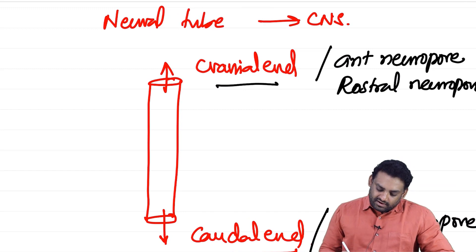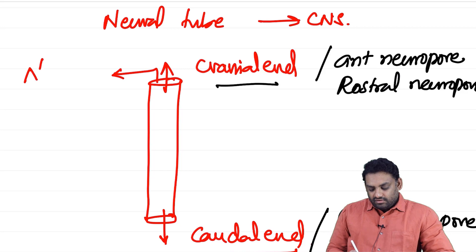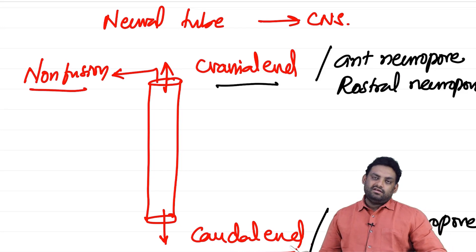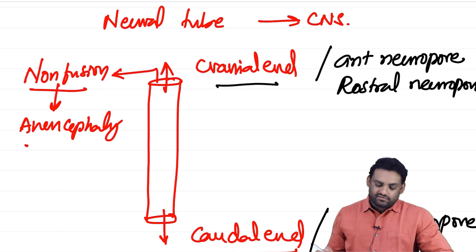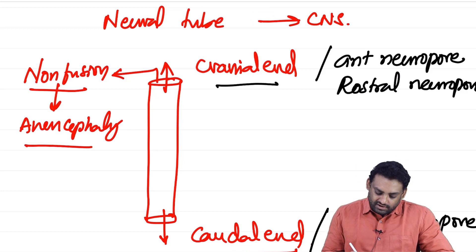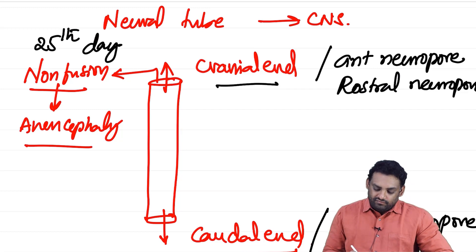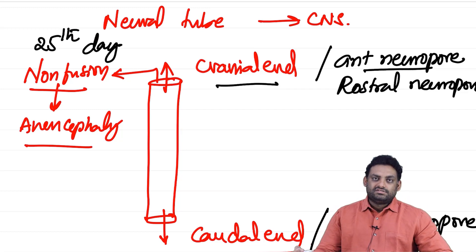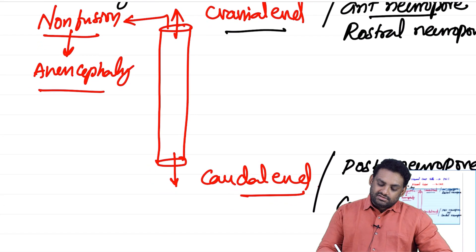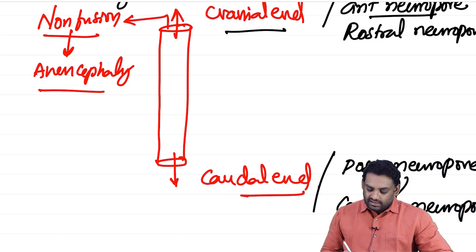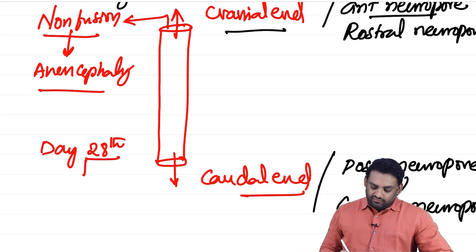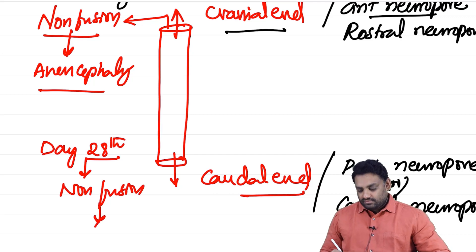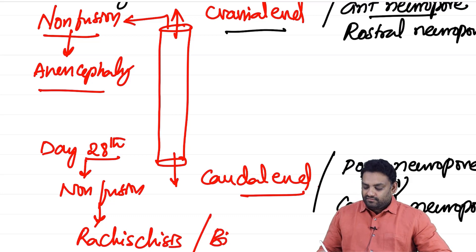If these openings are not closed, it is called non-fusion. Non-fusion of the anterior neuropore results in anencephaly. The anterior neuropore normally fuses on day 25. The caudal neuropore normally fuses on day 28, and non-fusion of the caudal neuropore results in rachischisis or spina bifida.